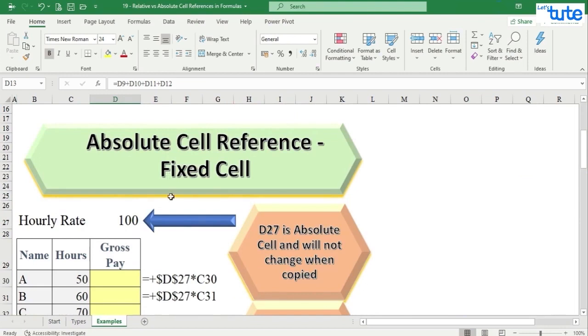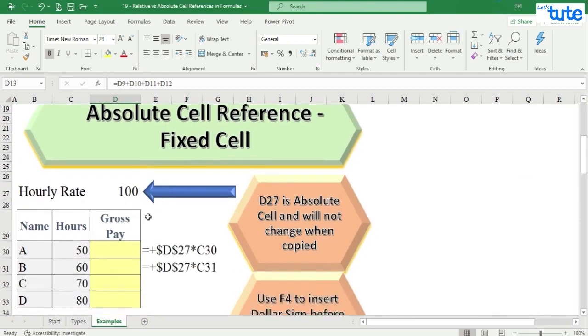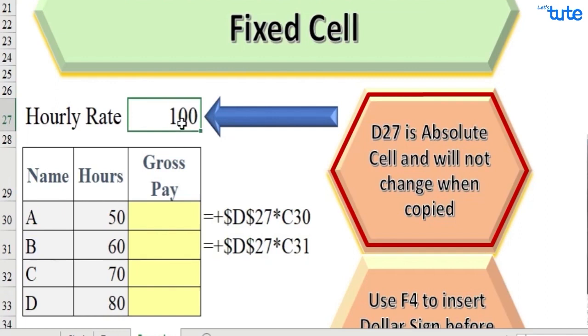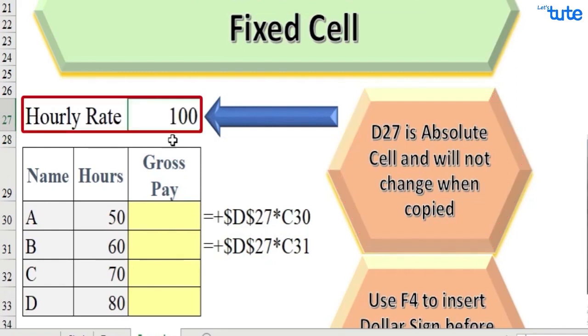Now we want the hourly rate of 100, that is cell number D27, to be fixed in all formulas. So how do we do it? Here we have an example.